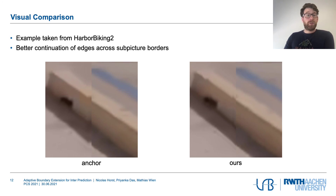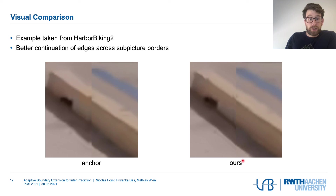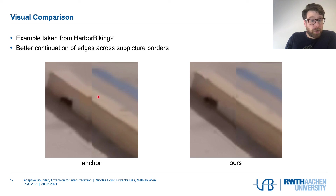For a visual comparison, an example from Harbor Biking 2 shows a sub-picture boundary in the middle of the frame — without any de-blocking applied. With the anchor method there is a clear discontinuity caused by the perpendicular continuation of the edge pixels, which is not present with our method. This demonstrates a meaningful visual improvement achievable with such a method.